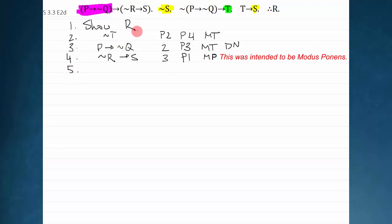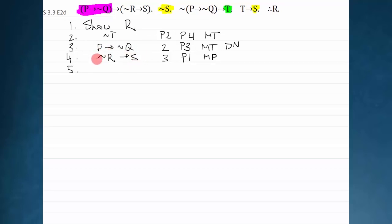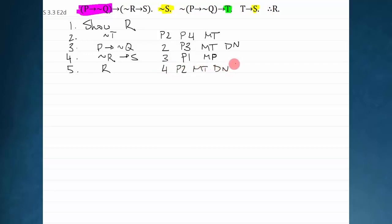Now I want to get r somehow, but I have this s. No problem — I see I have not s over here, which is the negation of the consequent. I can do modus tollens, which will yield not not r. But I'm just going to shortcut and say r. How did I get that? Line 4 and premise 2, modus tollens — which gave me not not r — then I did a double negation.